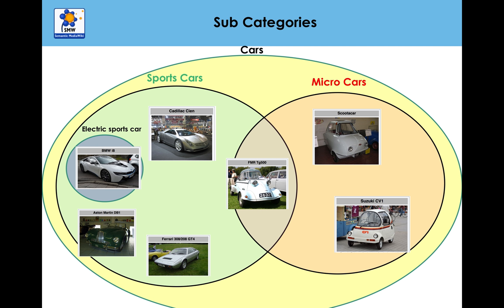So you've got all these categories — now how do you use MediaWiki markup language to link them? Because if you write double brackets, Category:Cars, that's going to turn the page into a category. What you actually want to do is link to that category. So let's show you how you can do that on the web page.